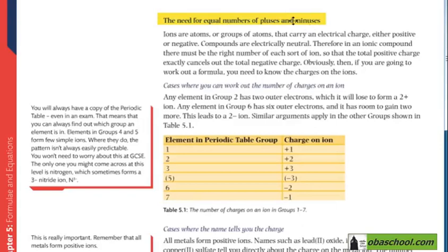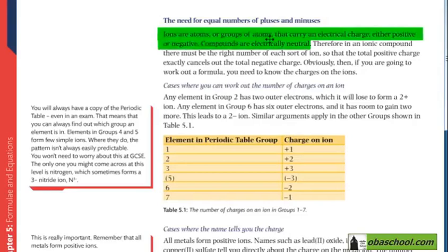So the total positive charge should be equal to the total negative charge. Ions are atoms or groups of atoms that carry an electrical charge, either positive or negative. So what are ions? They're atoms or groups of atoms, but they carry an electrical charge. This charge can be either positive or negative.